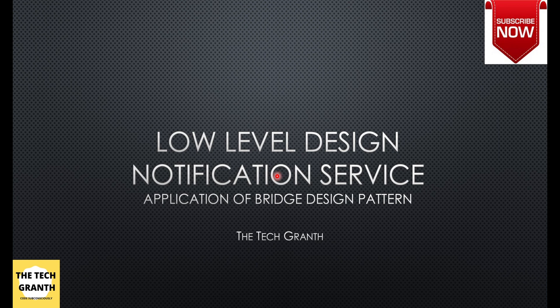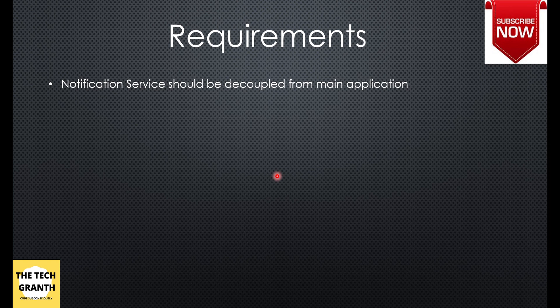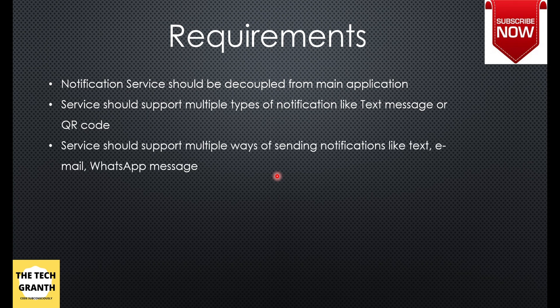The requirements we are looking at: first, we have a notification service that we have to create, and this service should be decoupled from the main application so that it is like a plug-and-play kind of application — it can be plugged in with any application that wants to send a notification. The service will support multiple types of notification: you should be able to send a text message or a QR code, or in future any other form of message. It should also support multiple ways of sending — as SMS, email, or WhatsApp message.